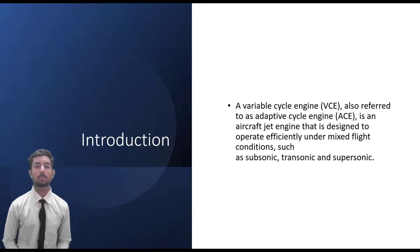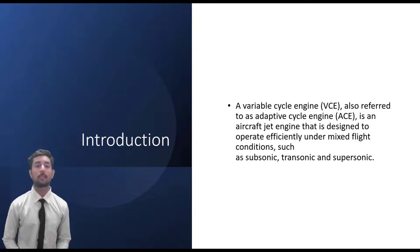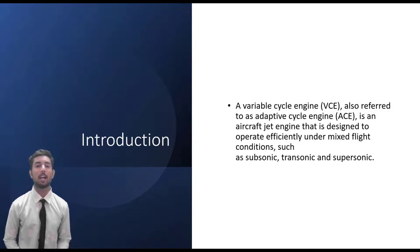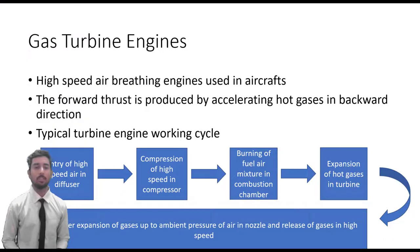The next generation of supersonic transport may require some form of VCE to keep aircraft drag down. A supersonic engine requires high specific thrust to keep the cross-sectional area of the power plant to a minimum. Unfortunately, this implies a high jet velocity not only at supersonic use but also at takeoff, which makes the aircraft noisy.